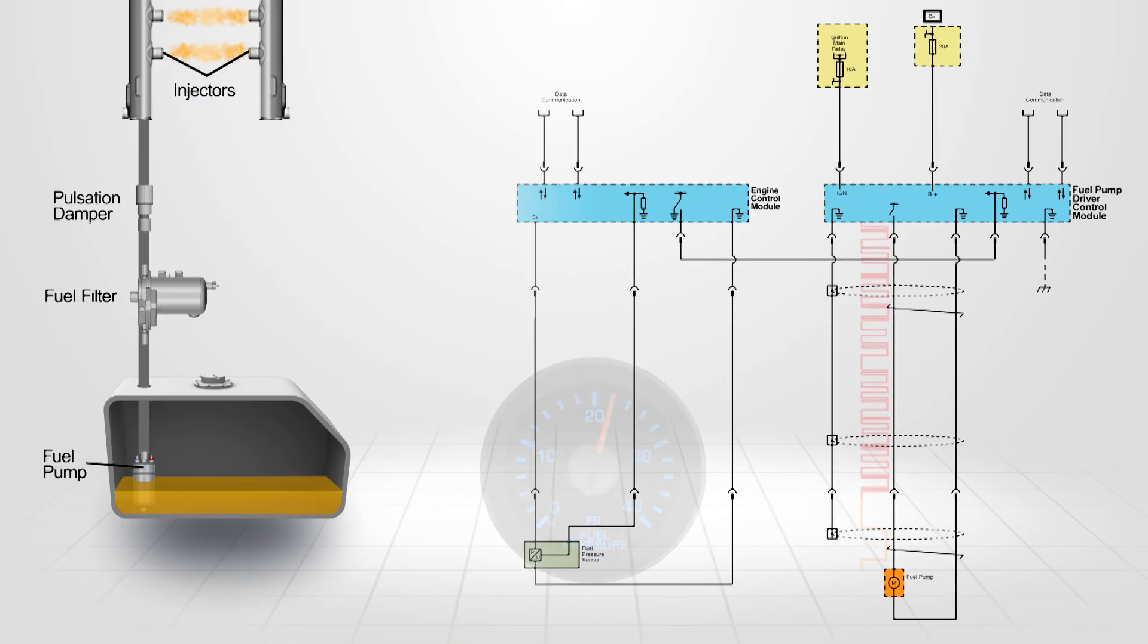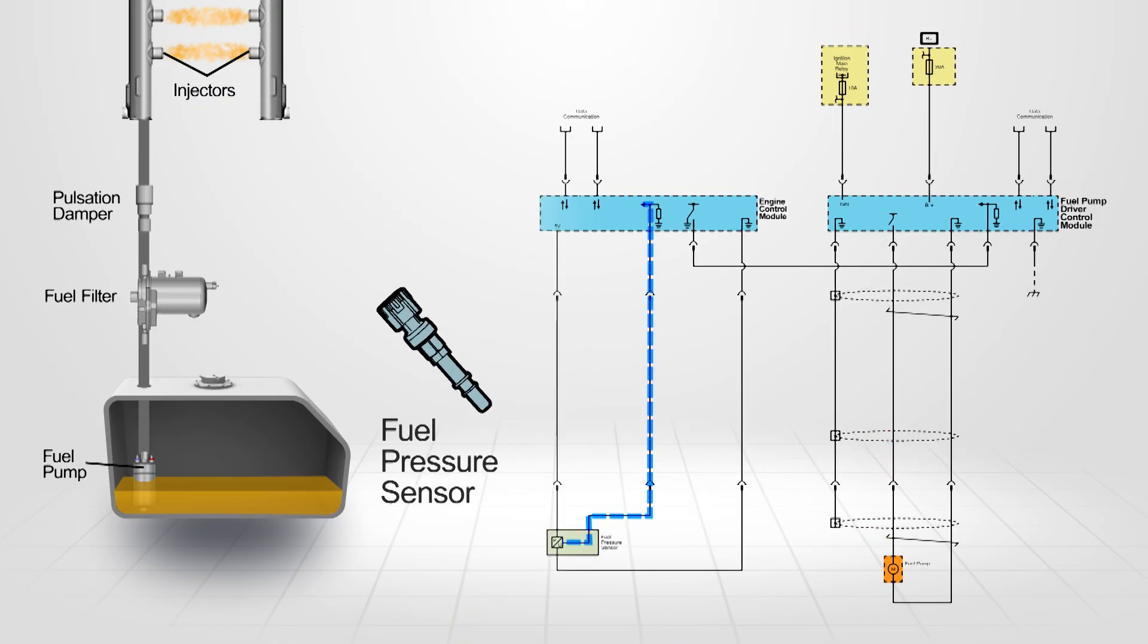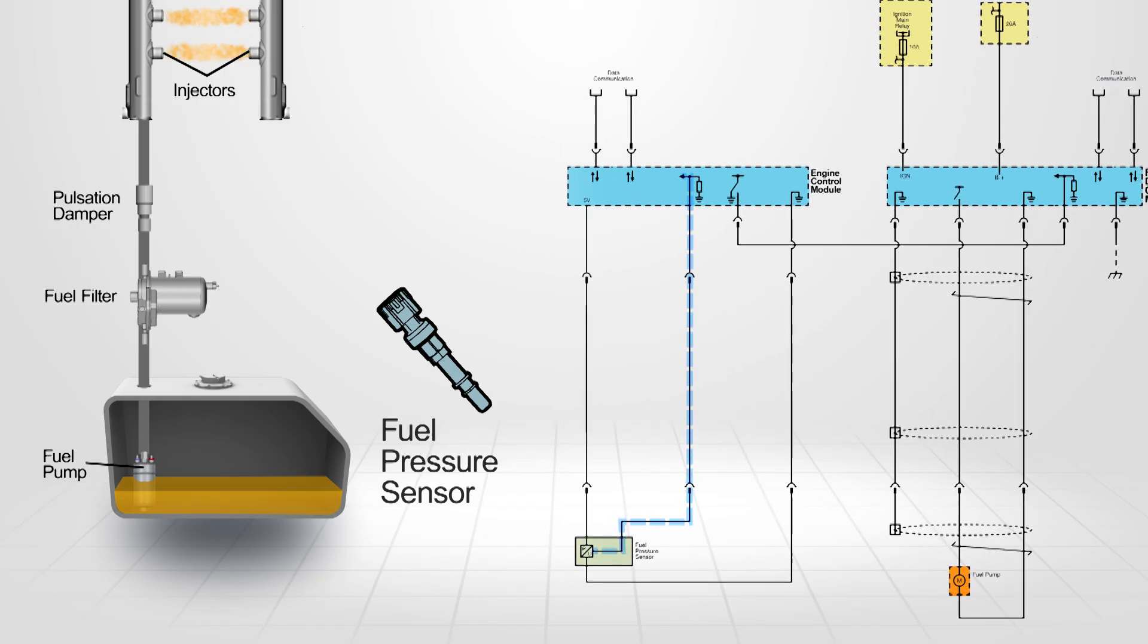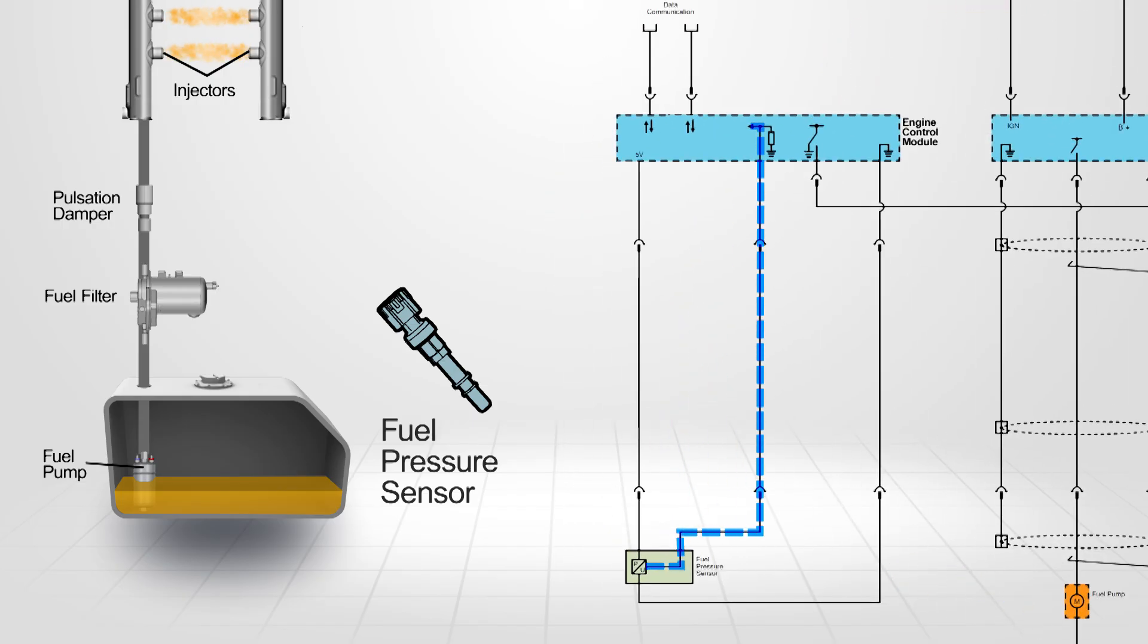A fuel pressure sensor provides the feedback the fuel pump module requires for pressure control. This sensor is located on the fuel feed line forward of the fuel tank and receives a high and low reference from the ECM. A varying voltage is signalled back to the ECM with reference to the fuel line pressure. This voltage is directly proportional to the fuel line pressure.